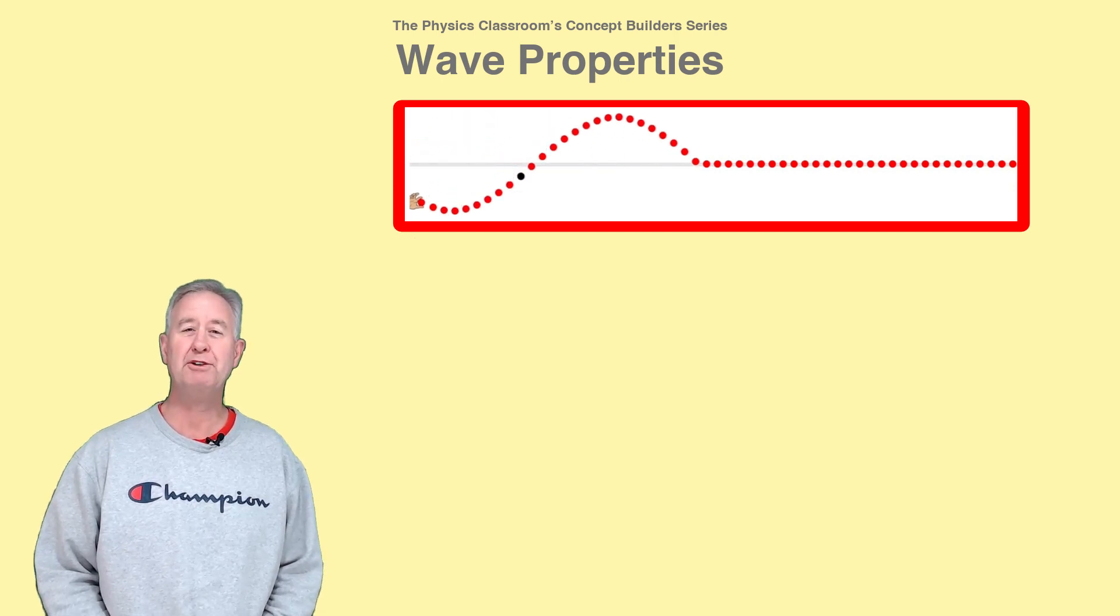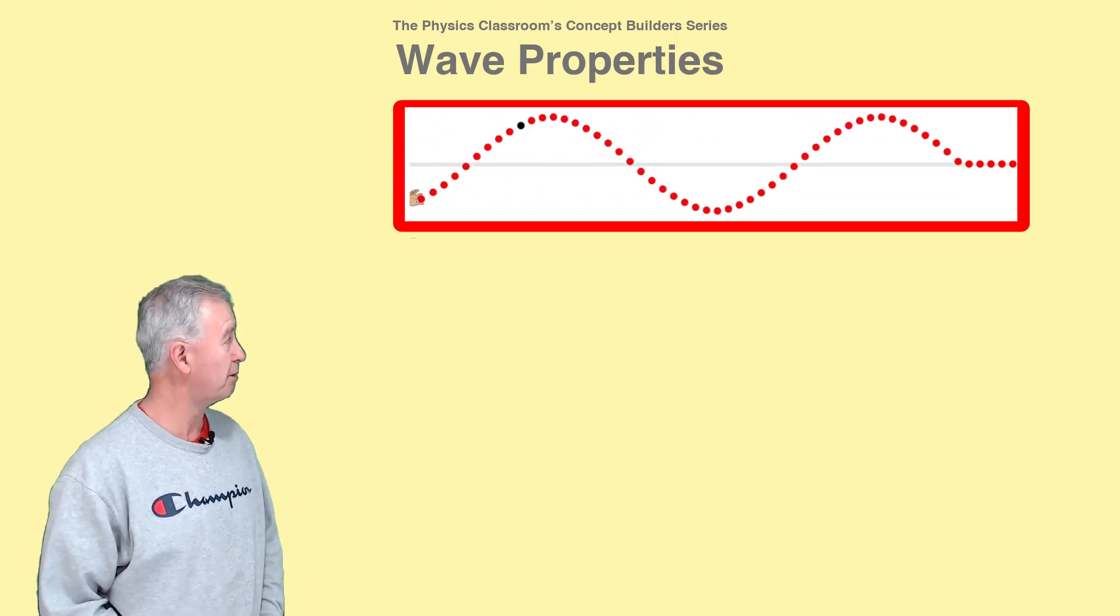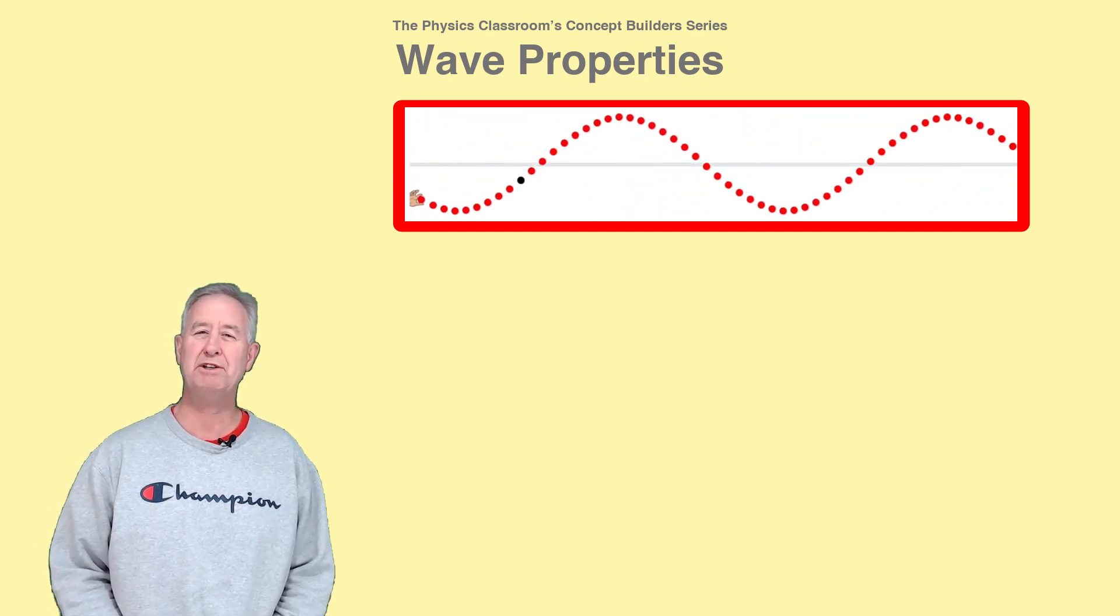Waves are repeating and periodic disturbances of a medium that cause particles to vibrate back and forth about a fixed position.